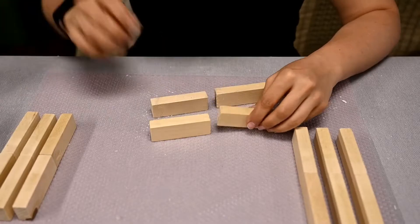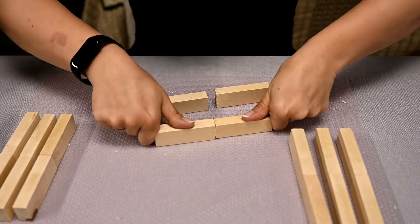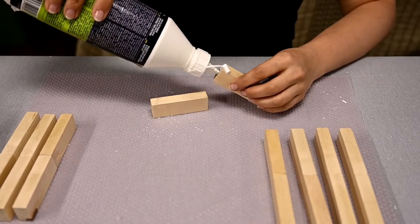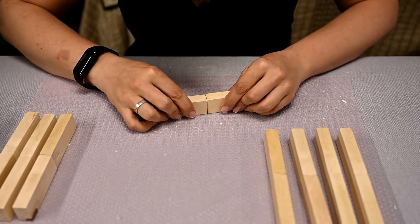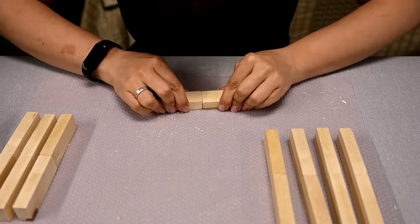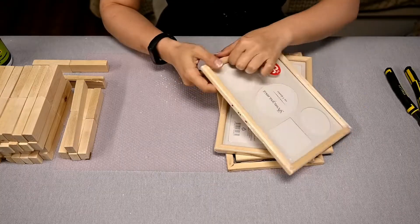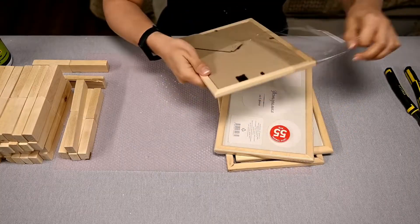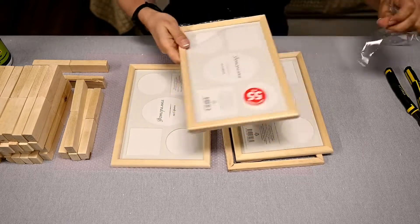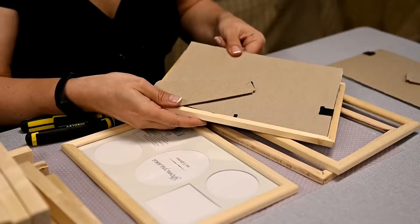For the second project first I'm connecting the blocks in pairs making bars. I'll need as many as 32 parts like this. Then I'll use photo frames. I have here untreated frames and you want to remove glass and glass holders from them.